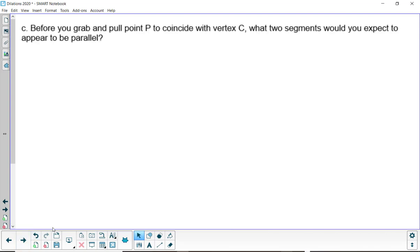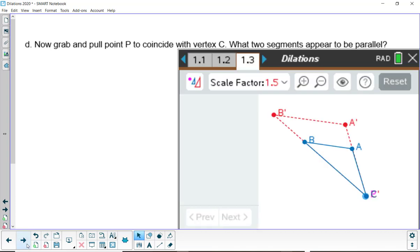And part C, if you put on C, what would you expect to be the ones that are parallel? AB and A prime B prime. Press pause as needed.